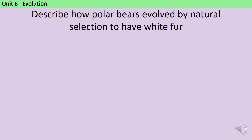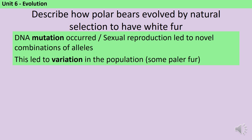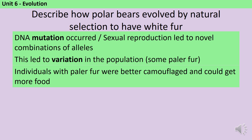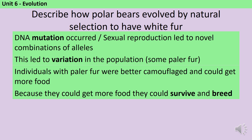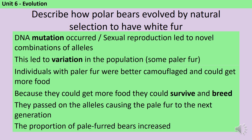Now it's your turn — pause the video and write down six points describing how polar bears evolved by natural selection to have white fur. In the same way as the giraffes: DNA mutation or sexual reproduction led to novel allele combinations, creating variation — some bears had paler fur, probably blonde rather than white initially. Individuals with paler fur were better camouflaged and could get more food. Because they could get more food, they could survive and breed, passing on the pale-fur alleles to the next generation. The proportion of pale-furred bears increased, and over several generations all bears evolved to have pale fur.